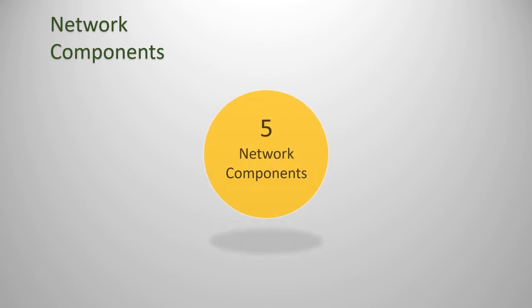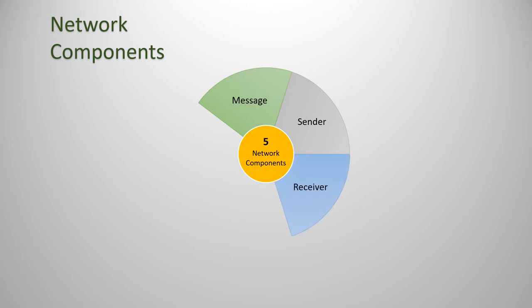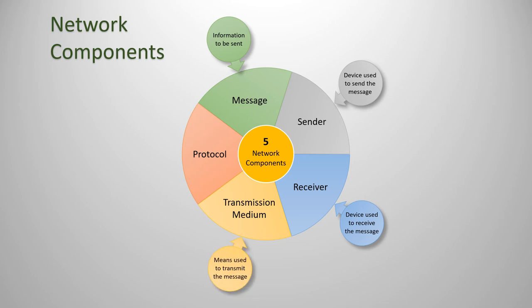There are five basic networking components: the message, the sender, the receiver, the transmission medium, and the protocol. The message has the information to be sent. The sender is the device used to send the message. The receiver is the device used to receive the message. The transmission medium is how the message is sent. And the protocol is the format used to send the message.